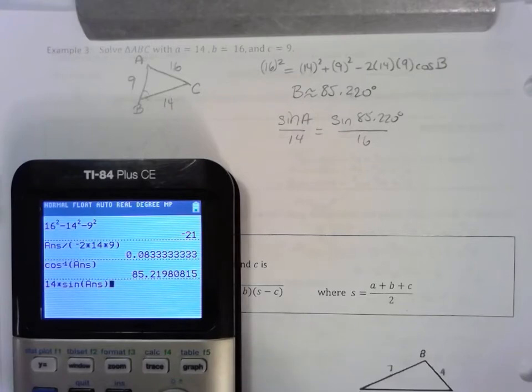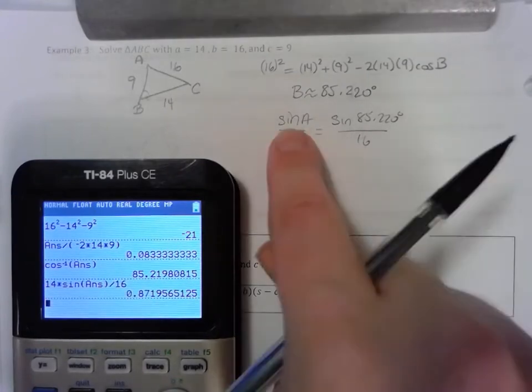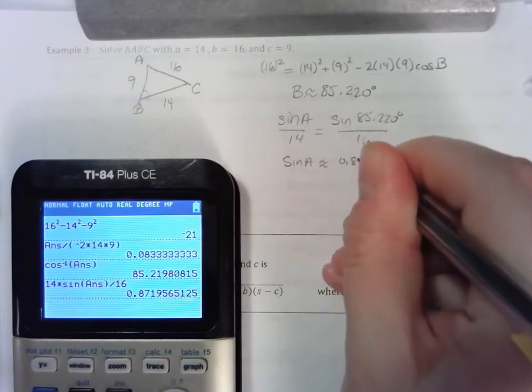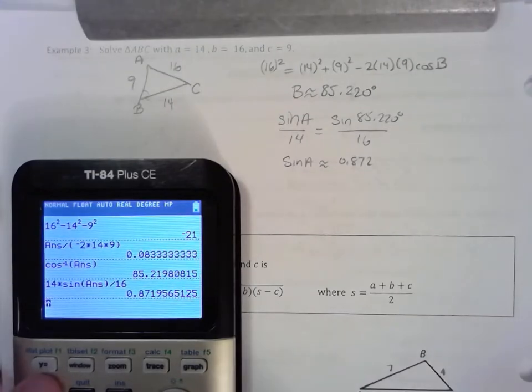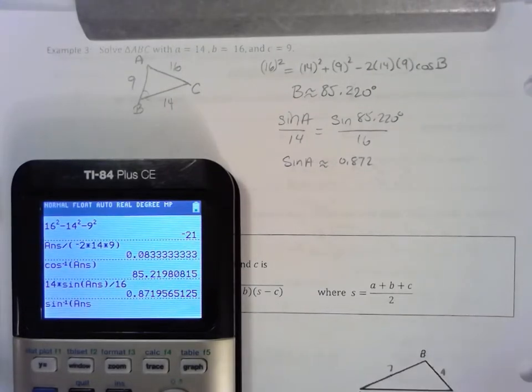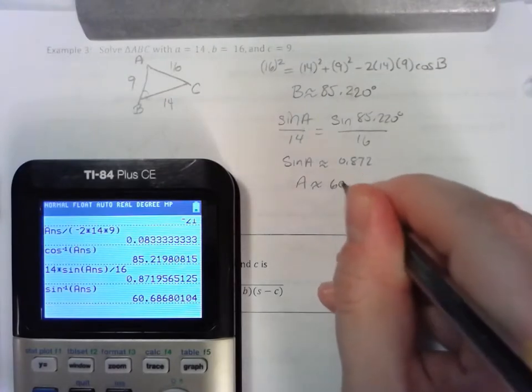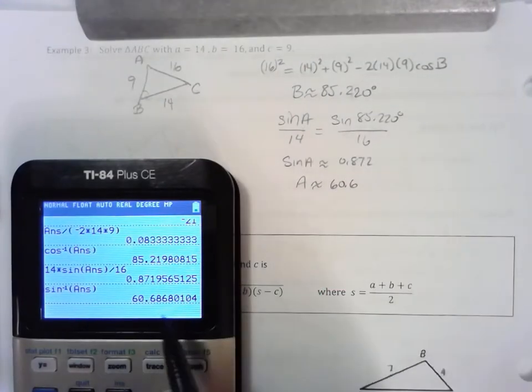Let's do 14 sine 85—let's do the answer—divided by 16. This is going to equal the sine of A. Sine of A is approximately equal to 0.872. Sine inverse to find the angle given that ratio: A is approximately equal to 60.687.